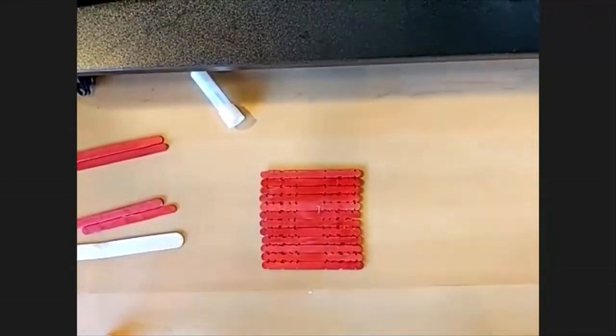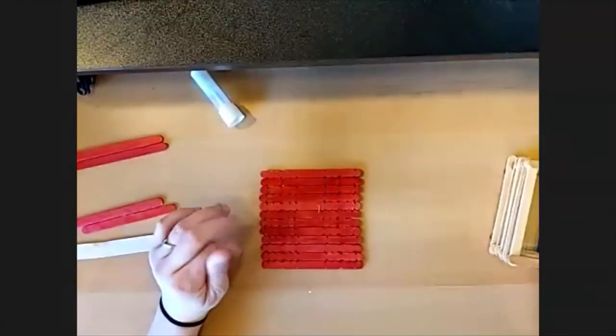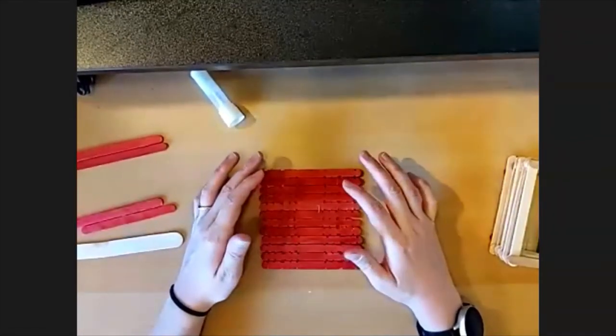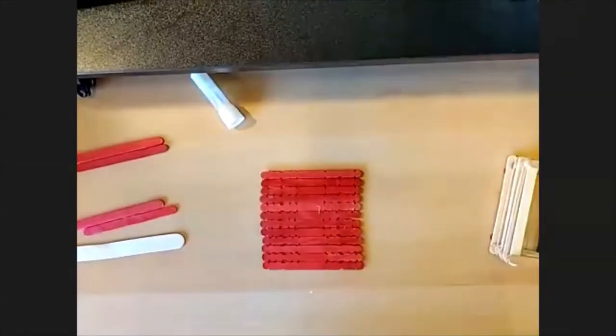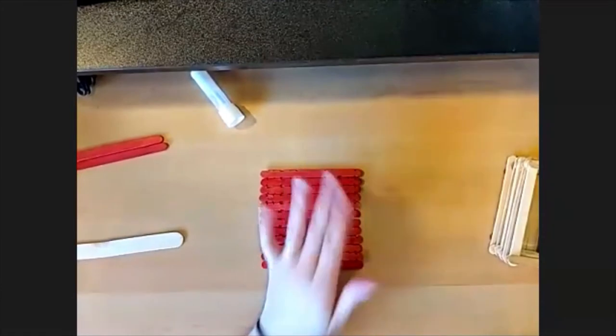You can also, if you've got some spare popsicle sticks or if you don't make the walls go up quite as far, you can take some extra popsicle sticks and line them up on the bottom next to those first ones to make it a little bit stronger. That's up to you.